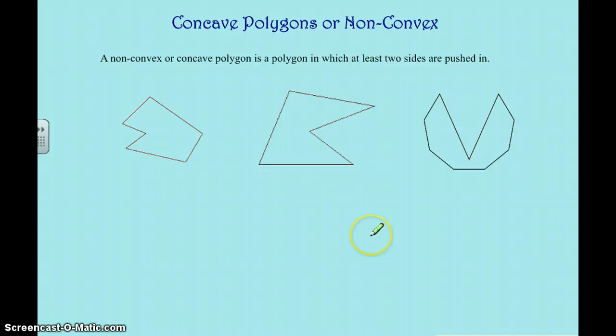Alright. The second piece to this is our concave polygons. They're also known as non-convex. So you might see them in textbooks or in other things we do in class. They're interchangeable. They're concave polygons and non-convex polygons. They're both talking about the same thing.